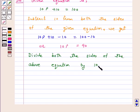So, we get 10p upon 10 is equal to 90 upon 10, or p is equal to 9, and this is the required solution.